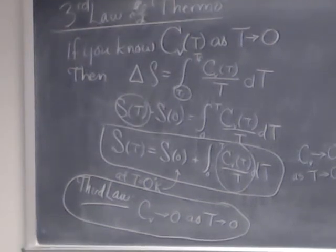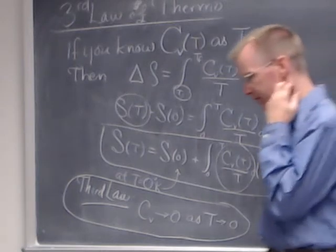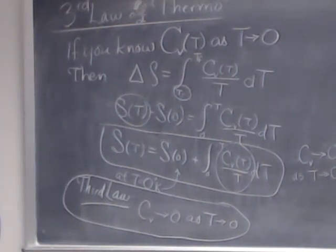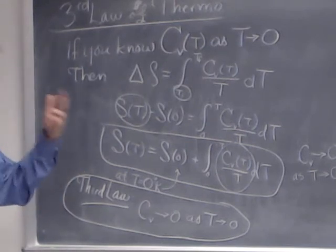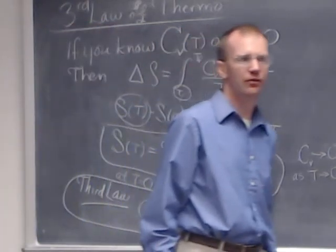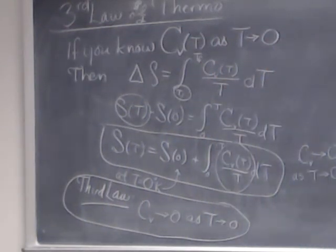To summarize the three laws: the first law is conservation of energy, dU equals Q plus W. The second law deals with entropy — systems naturally tend to stay the same or increase in entropy under irreversible processes, often paraphrased as 'things go from bad to worse.' The third law states that heat capacity must vanish at absolute zero.